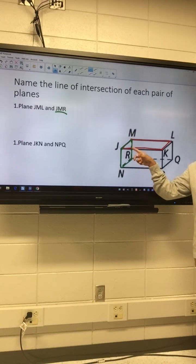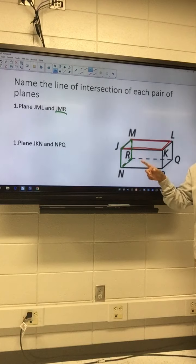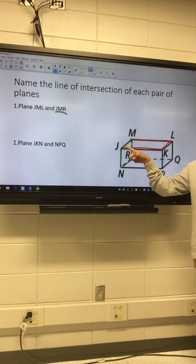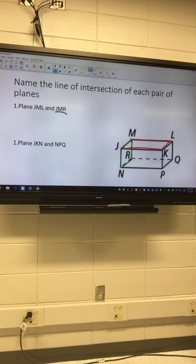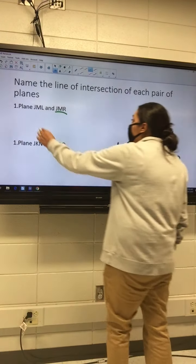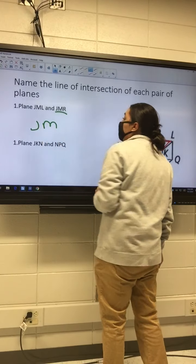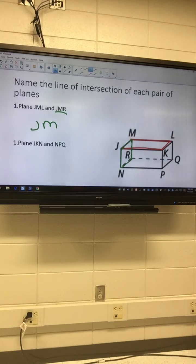Okay? And sometimes they kind of overlap right here, so it's a little bit funky looking, but it's actually JM, and it should line up perfectly. If you're using colored pencils, it should be exactly on that line. So, JM. The line of intersection is JM.